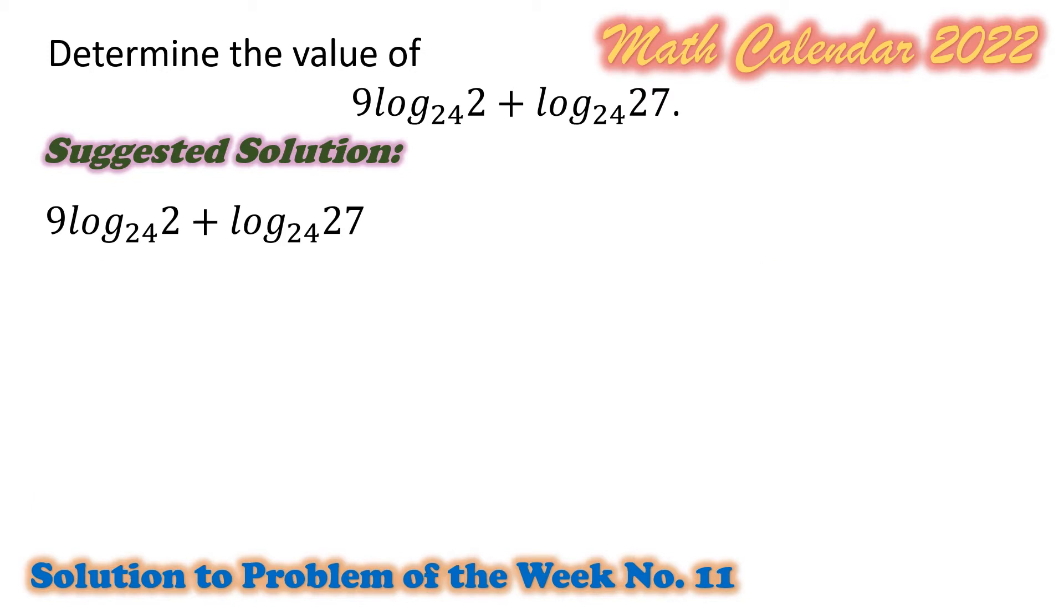From the given logarithmic expression, we can express the first term as logarithm of 2 raised to the 9th power to the base 24 and the second term may be expressed as logarithm of 3 cubed to the base 24. For the first term, we used the power rule of logarithm. That is, n times logarithm of m to the base b is equal to logarithm of m raised to n to the base b.